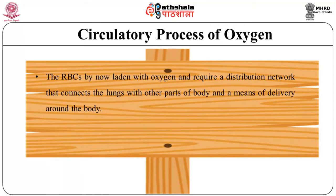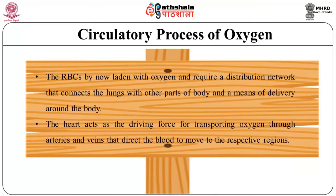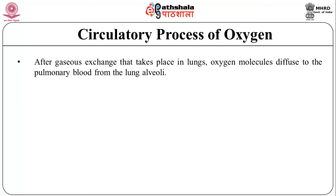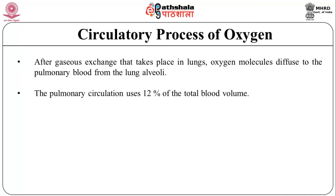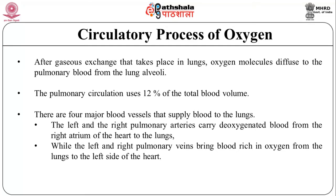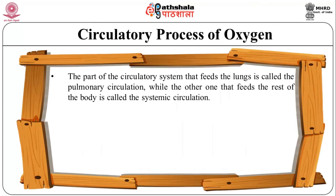Red blood cells (RBCs) laden with oxygen require a distribution network that connects the lungs with other parts of the body and a means of delivery around the body. The heart acts as the driving force for transporting oxygen through arteries and veins to respective regions. After gaseous exchange in the lungs, oxygen molecules diffuse to the pulmonary blood from the lung alveoli. The pulmonary circulation uses 12% of the total blood volume, with four major blood vessels supplying the lungs. The left and right pulmonary arteries carry deoxygenated blood from the right atrium to the lungs, while the left and right pulmonary veins bring oxygenated blood from the lungs to the left side of the heart. The part of the circulatory system feeding the lungs is called pulmonary circulation, while the one feeding the rest of the body is called systemic circulation.